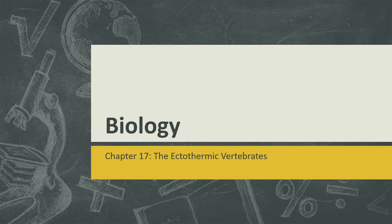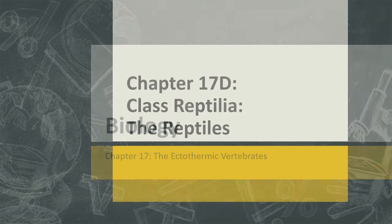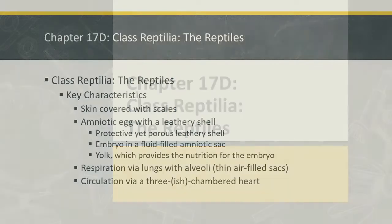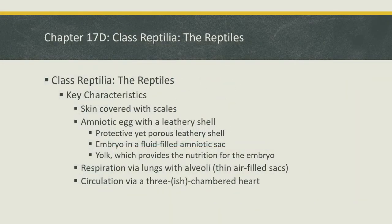Let's talk about reptiles. This is still chapter 17, the ectothermic vertebrates — animals with backbones that are cold-blooded. Chapter 17, part D, class Reptilia, also known as the reptiles. First, some of the key characteristics of reptiles.